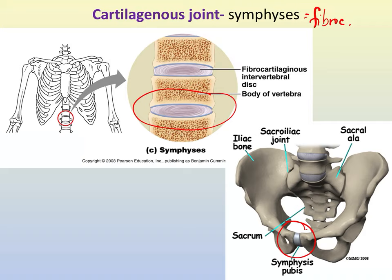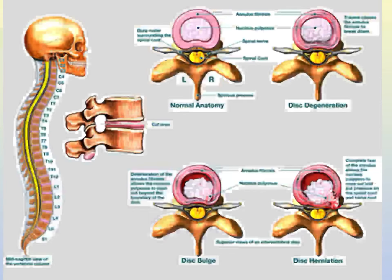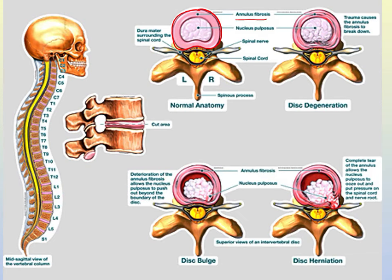Let's walk through the intervertebral disc. Under the intervertebral disc there are two terms: annulus fibrosis and nucleus pulposus. The annulus fibrosis is fibrocartilage arranged in concentric circles around the exterior of the intervertebral disc. Inside, in the middle, is the nucleus pulposus, which is like a gel. The nucleus pulposus is very absorbing of compressive forces and provides resilience to compressive forces in the back.